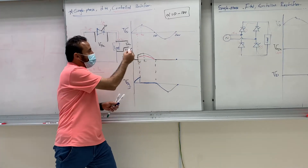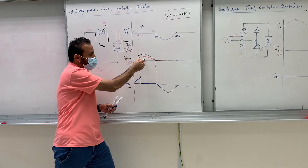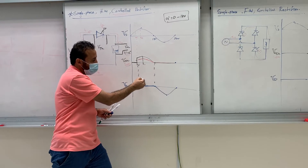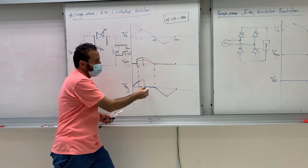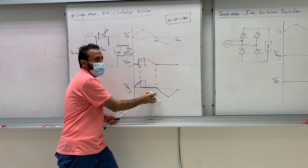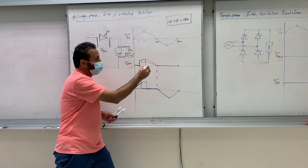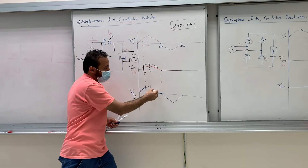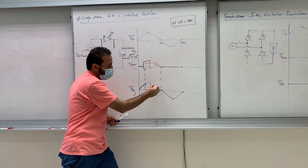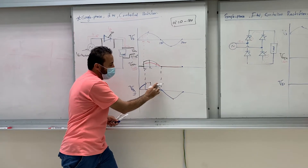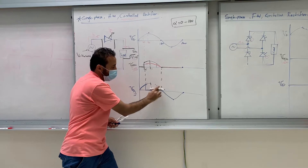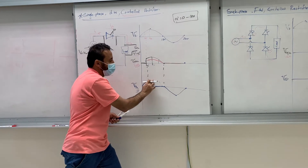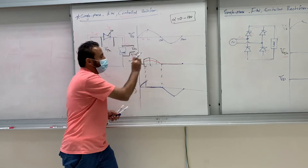If alpha is 90°, you'll see the thyristor voltage starting from that point. If alpha is 120°, it will start even later. In our example with alpha = 45°, V_thyristor shows everything before 45° plus the negative half-cycle, and the region where current flows is zero.